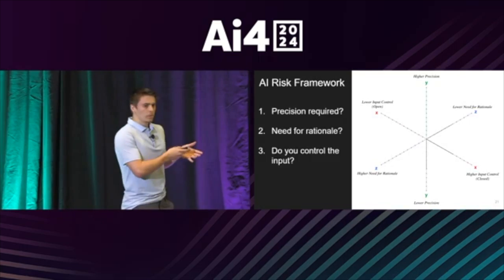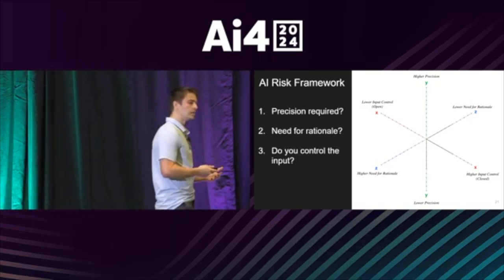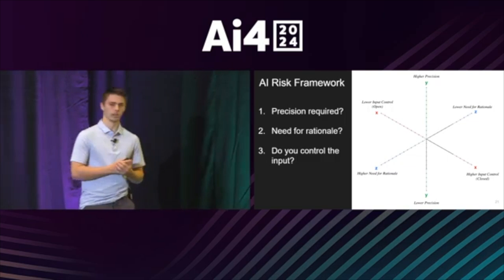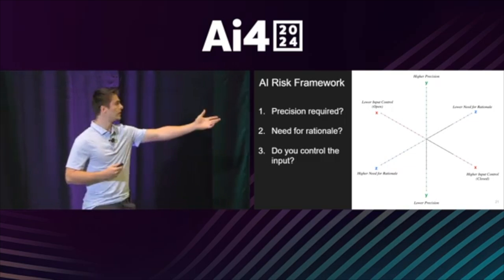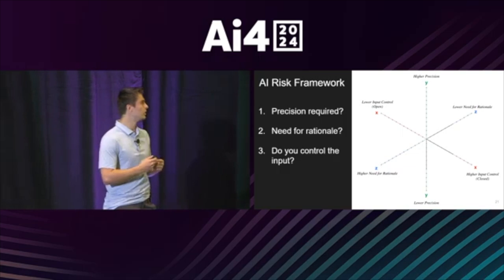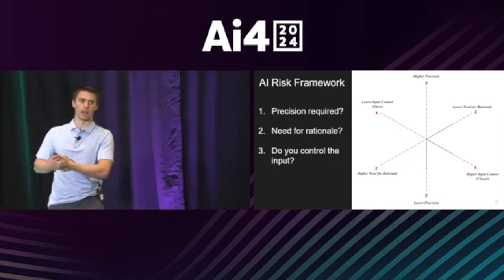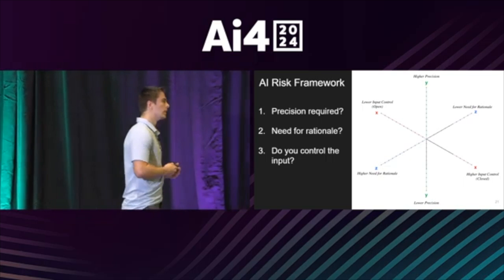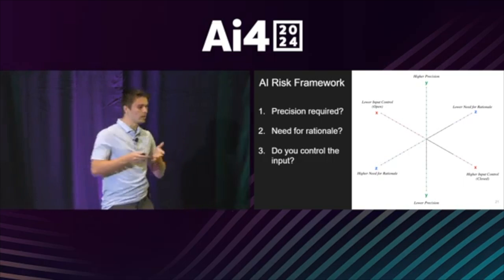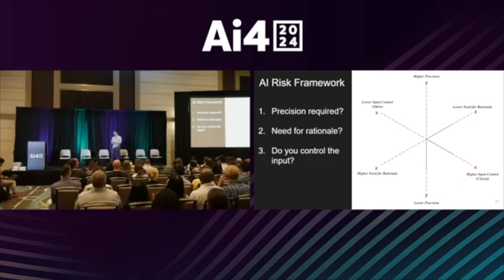Given the bizarre nature of AI, how do we decide when are the good use cases and when are the bad ones? In our book, The AI Conundrum, we developed this risk framework with three axes corresponding to three basic questions: How much precision do you need in your use case? How strongly do you need rationale — how much do you need to understand what the AI is doing? And how much do you control the input — are you in an open or closed environment?